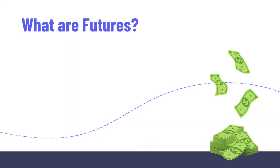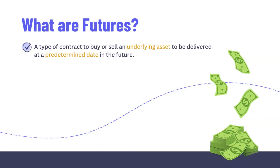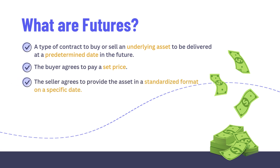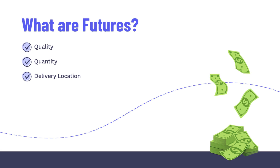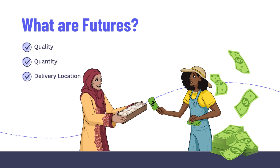What are futures? A type of contract to buy or sell an underlying asset to be delivered at a predetermined date in the future. The buyer agrees to pay a set price while the seller agrees to provide the asset in a standardized format on the specific date. This means the quality, quantity, and delivery location are the same for all sellers for that type of futures contract.